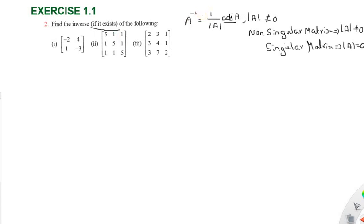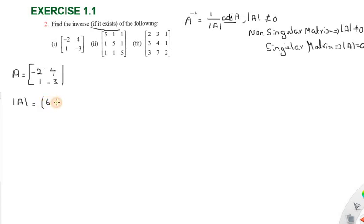The first matrix A is: minus 2, 4, 1, minus 3. We have determinant of A equal to minus 2 into minus 3, minus 4 into 1, equal to 6 minus 4 equal to 2. So determinant of A equals 2, which is not equal to zero, so this is a non-singular matrix.